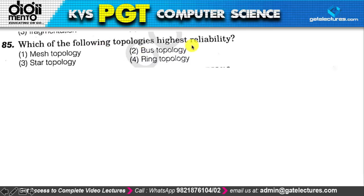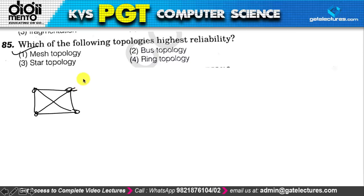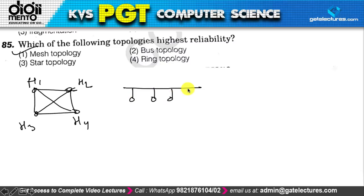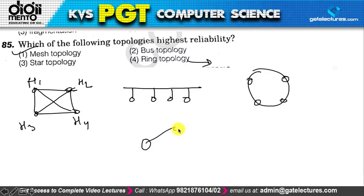Next: which topology offers the highest reliability? The answer is mesh topology. In mesh topology, every pair of hosts has a dedicated connection. Bus topology uses a single shared bus; ring topology connects hosts in a ring; star topology uses a hub. Among all these, mesh topology provides the highest reliability because of its redundant connections between every pair of hosts.